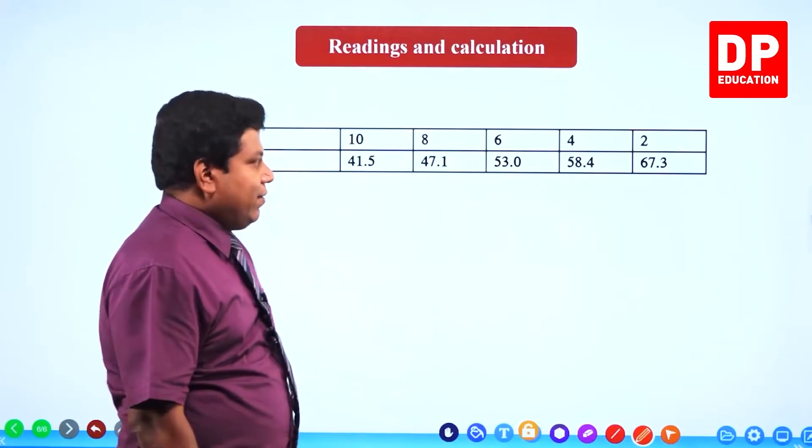So we have taken five different known resistance values and found the equilibrium point distance L for each. Now we will take all these values, convert them into a graph format — drawing a 1/L versus R graph — and from the gradient we can precisely find the unknown resistance X.